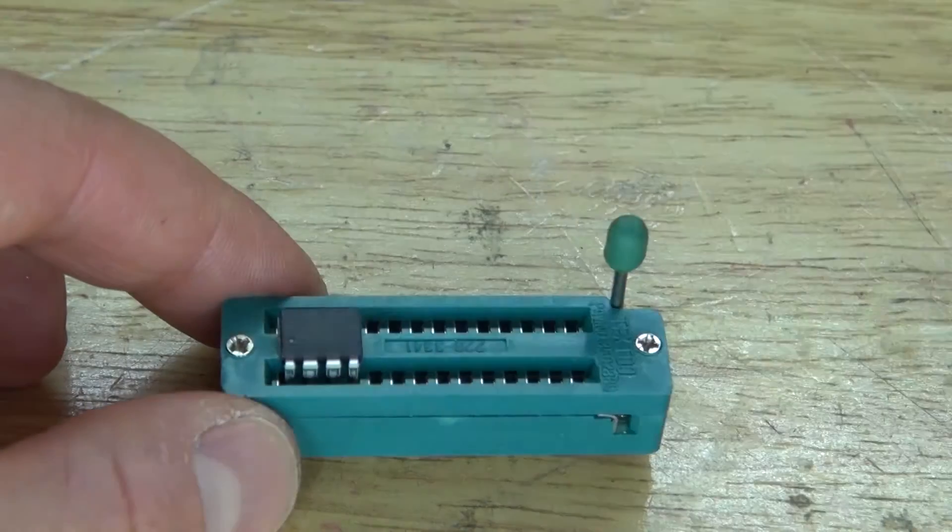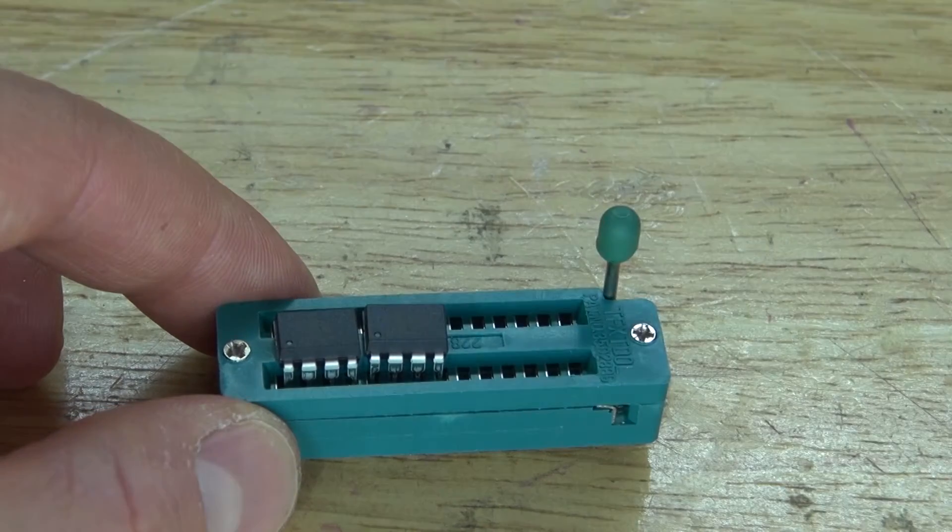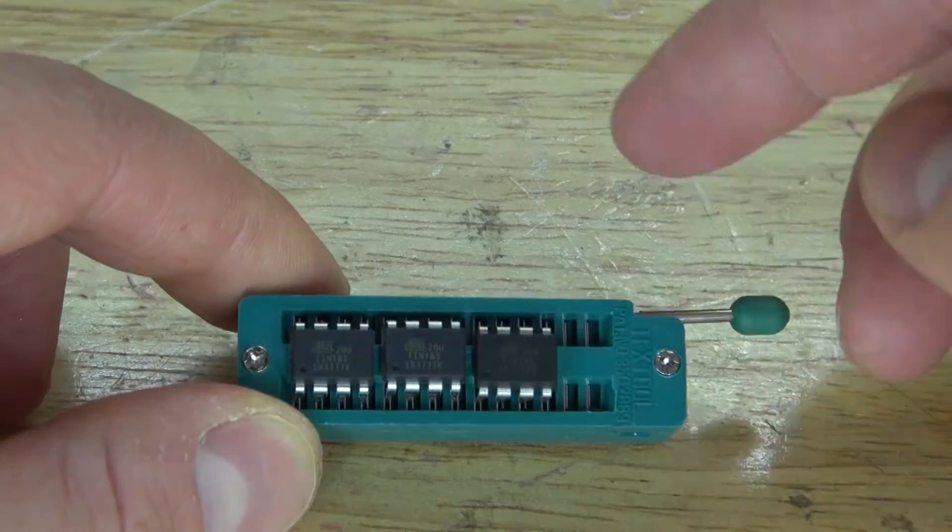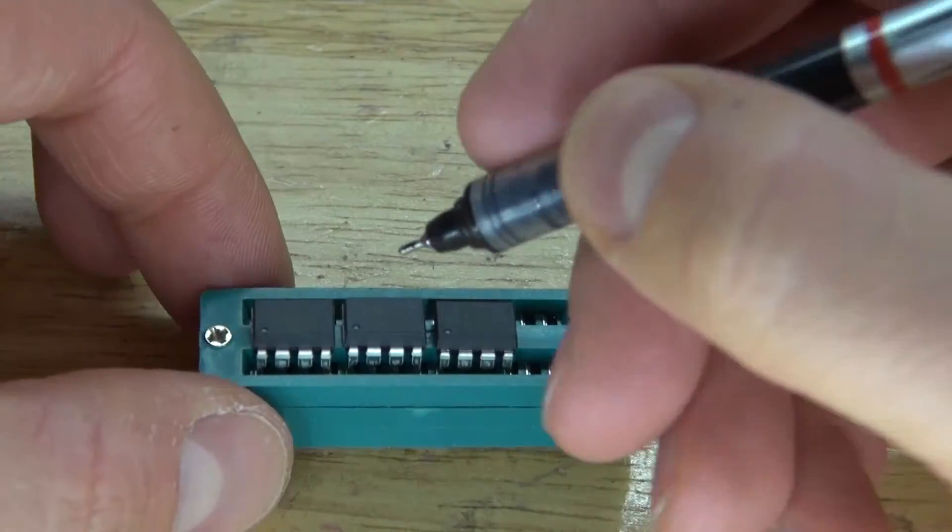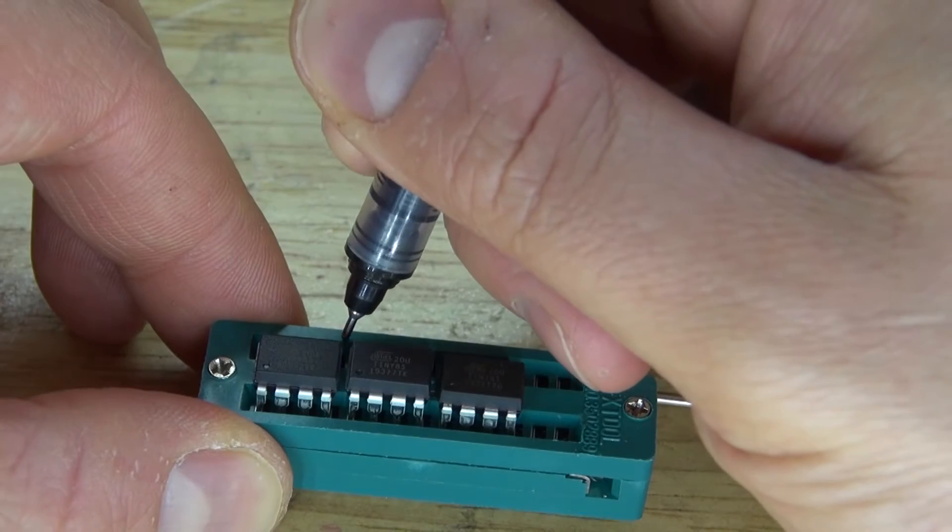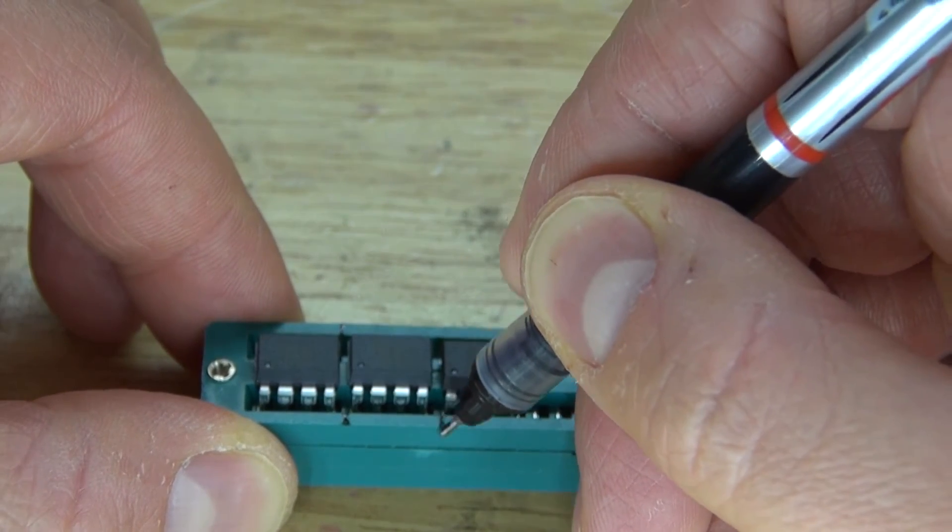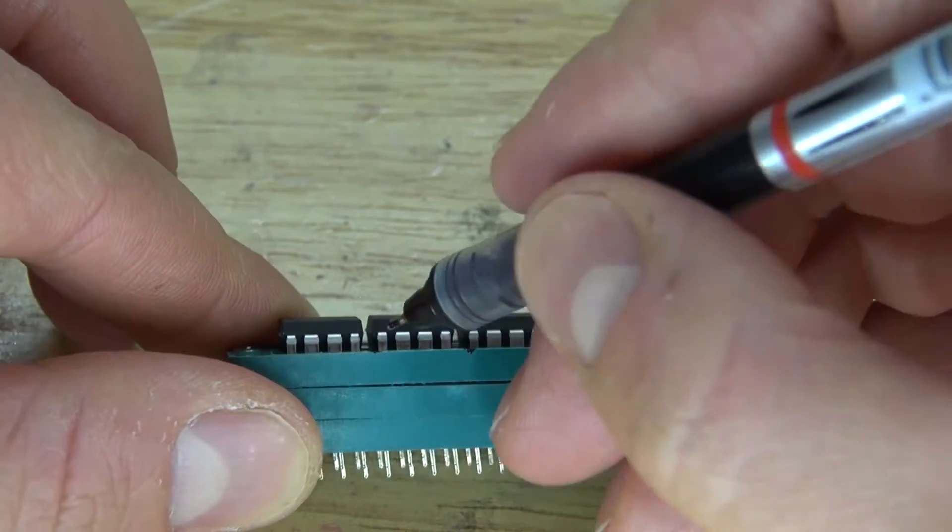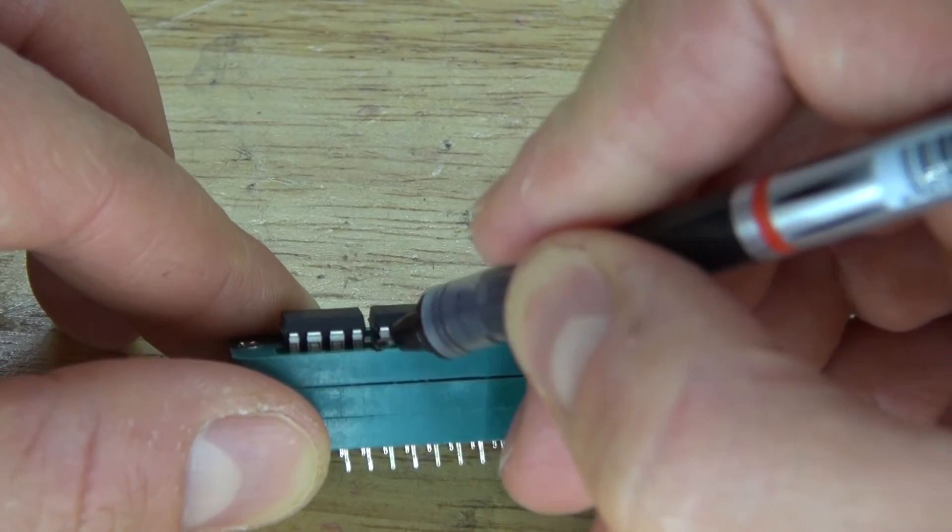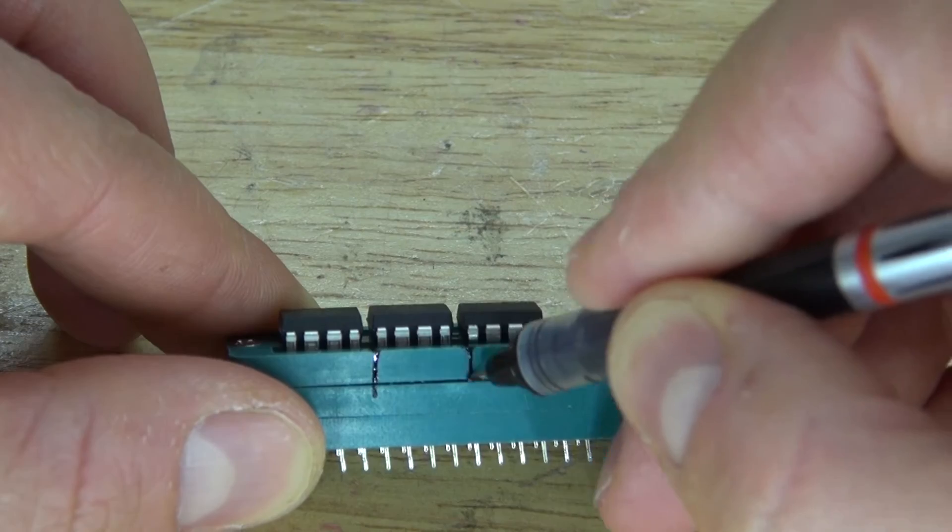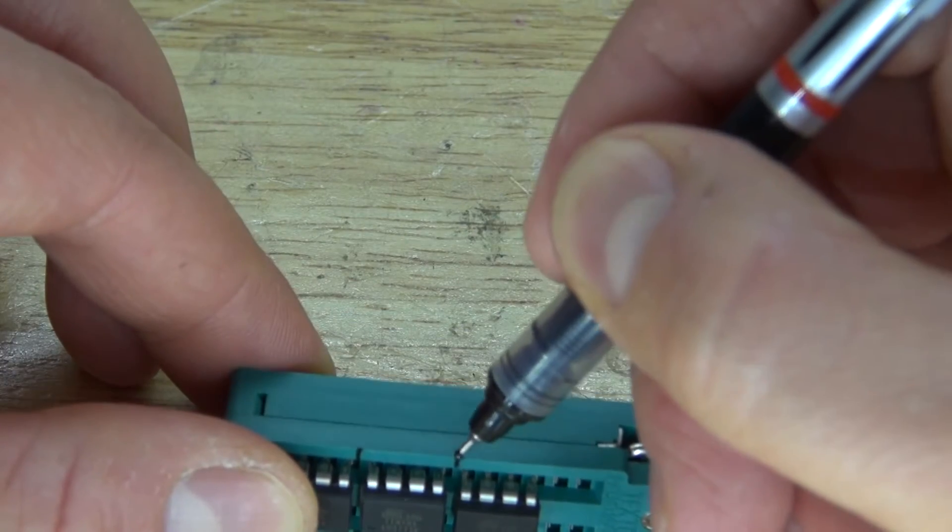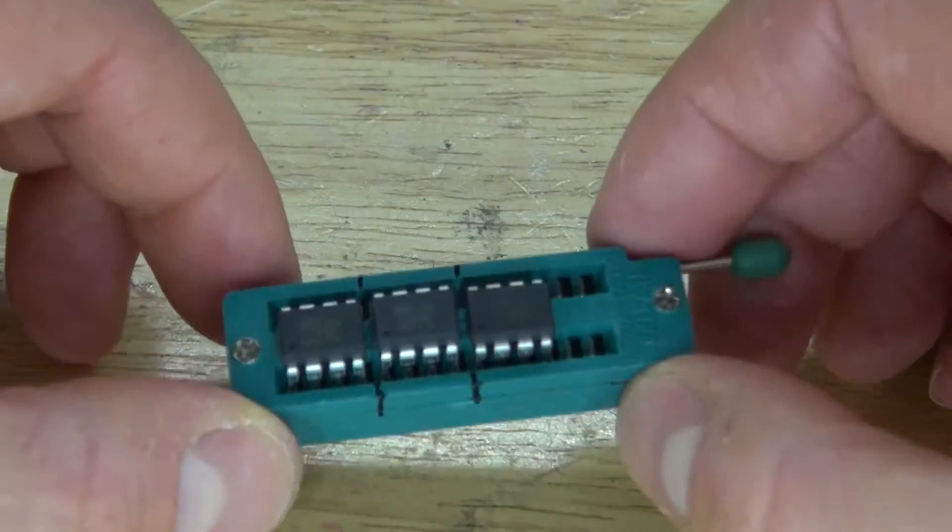First, what I'm going to do is take three ATtiny85 microcontrollers, place them into this component, lock them in place. Next, I'm going to take this permanent marker and place a little mark in between each ATtiny85 microcontroller, so then that way I know where to place the ATtiny85. So then that way it'll be easier to identify where the pins are while soldering and placing the ATtiny in the future.